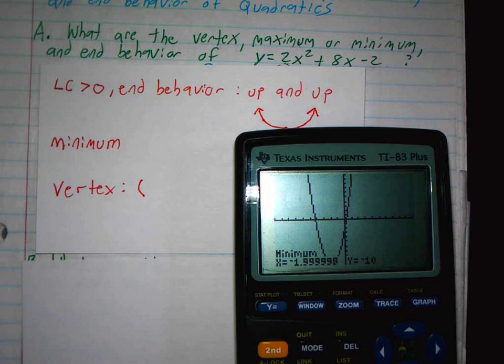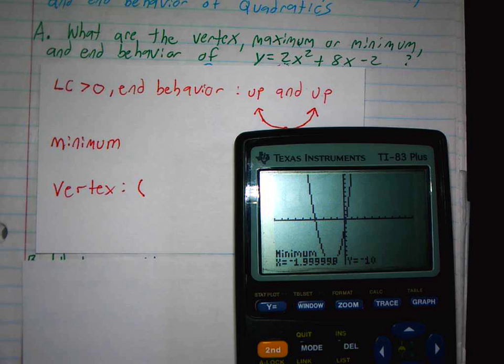Or if it says like negative 2.0000001, that would be negative 2. And if you ever see an e in there, that means it's 0. So if you ever see one with an e, that means put a 0 instead.